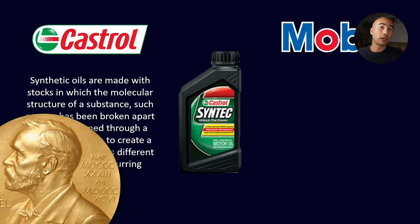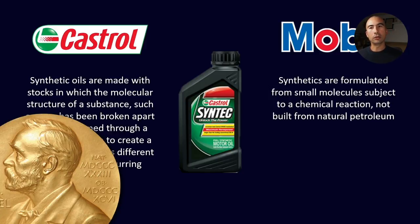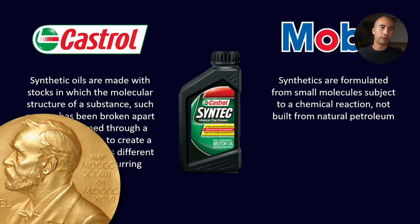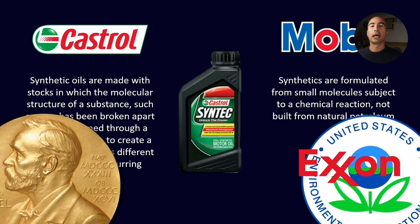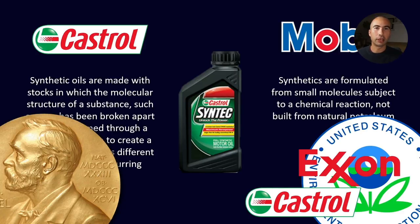They called a couple of expert witnesses who had Nobel Prizes in chemistry — calling in the big guns. On Mobil's side, they argued that synthetics are actually formulated from very small molecules that you then react together to form larger molecules. They don't come from crude oil or any kind of natural petroleum product — they have to start as a pure base stock, like ethylene, and you turn it into a polyalpha olefin. On their side, they had documentation from the EPA, the agreement of Exxon — which was pre-merger, so Exxon and Mobil were actually competitors at that time — and they also supplied evidence from Castrol's own website, which indicated that Castrol had documented a very similar definition.